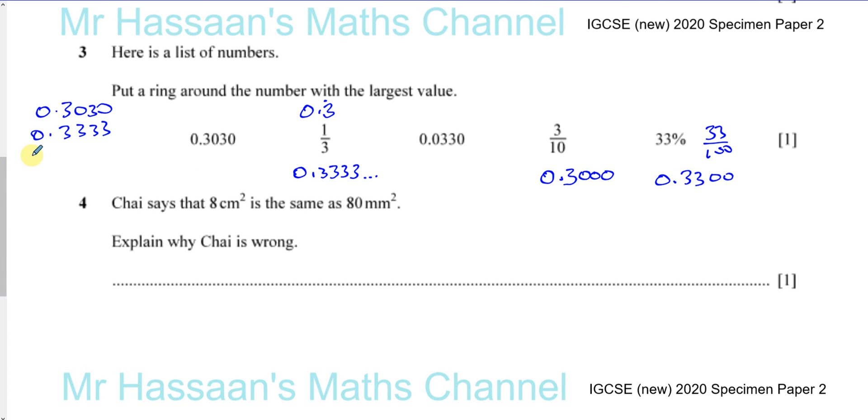and you have 0.0330, and you have 0.3, and you've got three zeros, and you've got 0.3300.